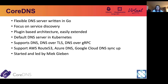CoreDNS supports a wide range of DNS protocols. It has different protocol support from DNS, DNS over TLS, and DNS over gRPC. By the way, DNS over gRPC is not a true DNS standard — it is a custom implementation by CoreDNS. CoreDNS also has wide range of support for different cloud vendors. We have support to sync up data from AWS Route 53, Microsoft Azure DNS, and Google Cloud DNS.